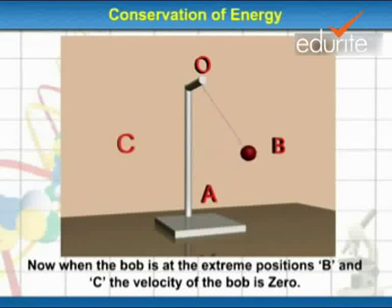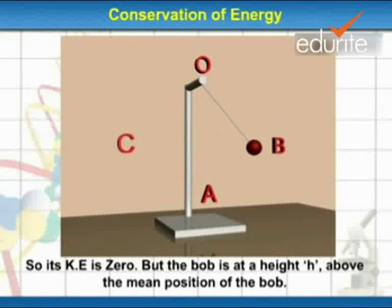Now, when the bob is at the extreme positions B and C, the velocity of the bob is zero. So its kinetic energy is zero. But the bob is at a height h above the mean position of the bob.